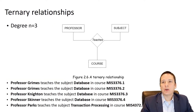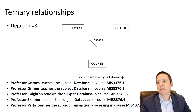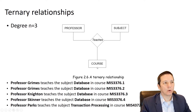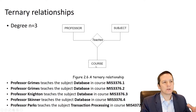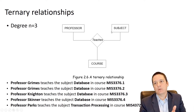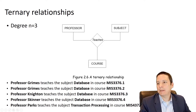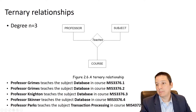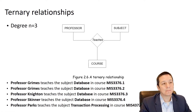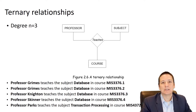Taking it up one level to ternary relationships, we have a degree of three — three entities participating in this relationship. A professor teaches a subject in a course. We have subjects like Business Analytics 6354, and the course is a particular section of that. You have a professor, a subject, and a course, and all three must come together. For example, Grimes teaches database in MIS 3376 section one, Grimes teaches database in section two, and Knighton teaches database in section three. That's a ternary relationship.